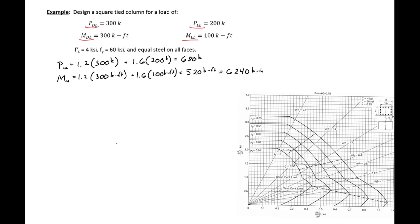The next thing we need to do is assume a column size. This can be iterative, and as you design more columns, you'll get to know what a good starting size is. For this column, I'm going to try an 18-inch by 18-inch square column. We will be using a design guide to help us, which can be found in textbooks such as Wight and MacGregor, or in design resources from ACI and PCA.